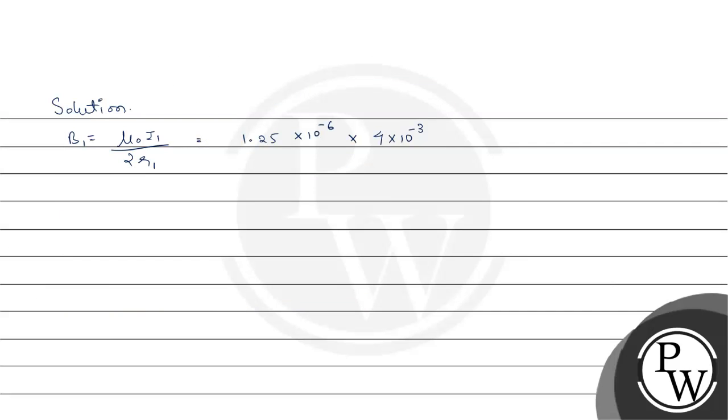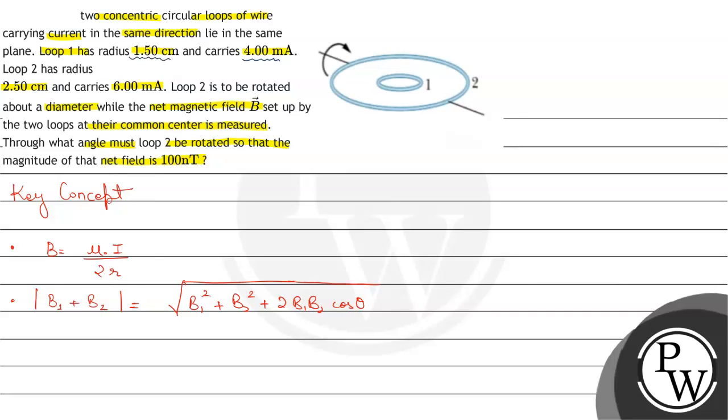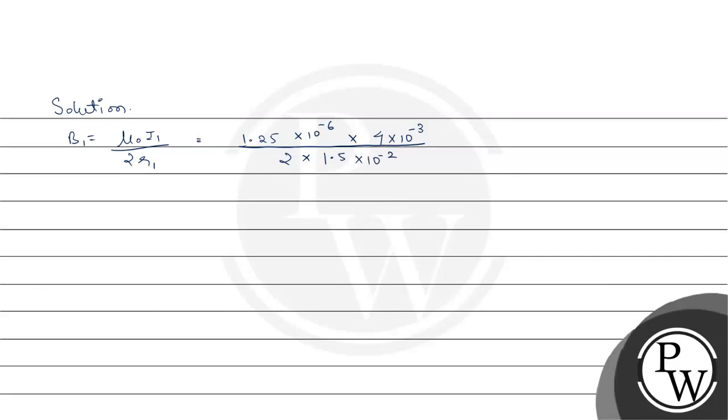So it will be 4 into 10 to the power minus 3 ampere upon 2 into what is r1? r1 is given to us as 1.50 centimeter. So it will be 1.5 into 10 to the power minus 2. Solving this we get 167.4 into 10 to the power minus 9 tesla. It will be in tesla or we can write it 167.4 nanotesla.